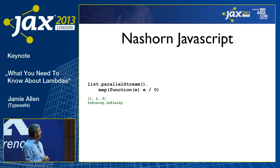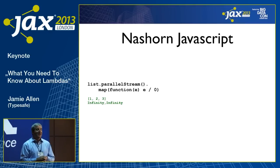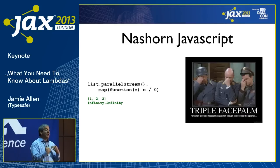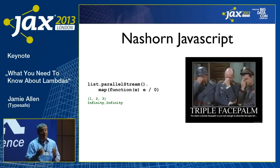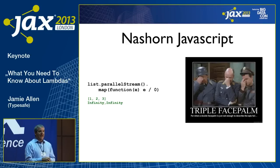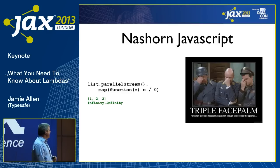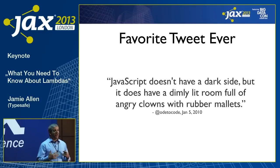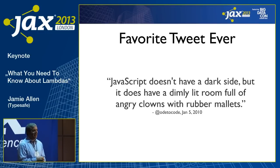In JavaScript, whenever I divide by zero — this is actually standard JavaScript behavior — instead of getting an error, I get infinity. This is actually why I don't want to write JavaScript in a server environment. I may want to write it on the JVM and leverage multi-threaded capabilities, but writing it server-side is dirty because I can't test every possible combination of things that can go wrong with JavaScript. My favorite tweet ever: 'JavaScript doesn't have a dark side, but it does have a dimly lit room full of angry clowns with rubber mallets.'